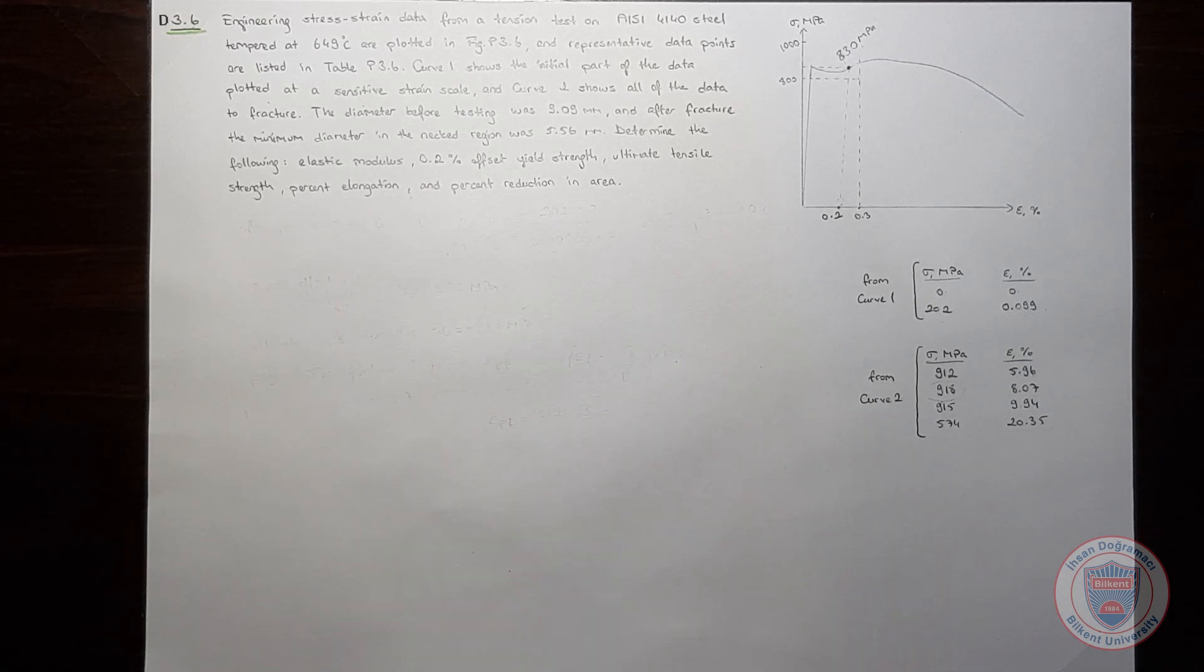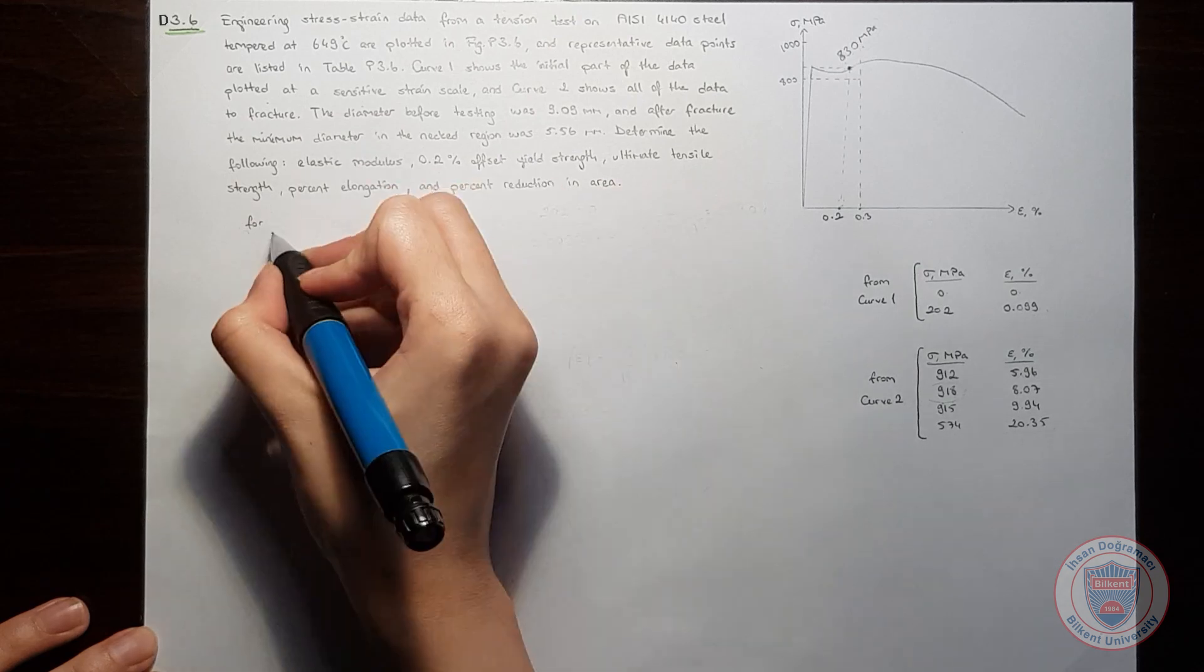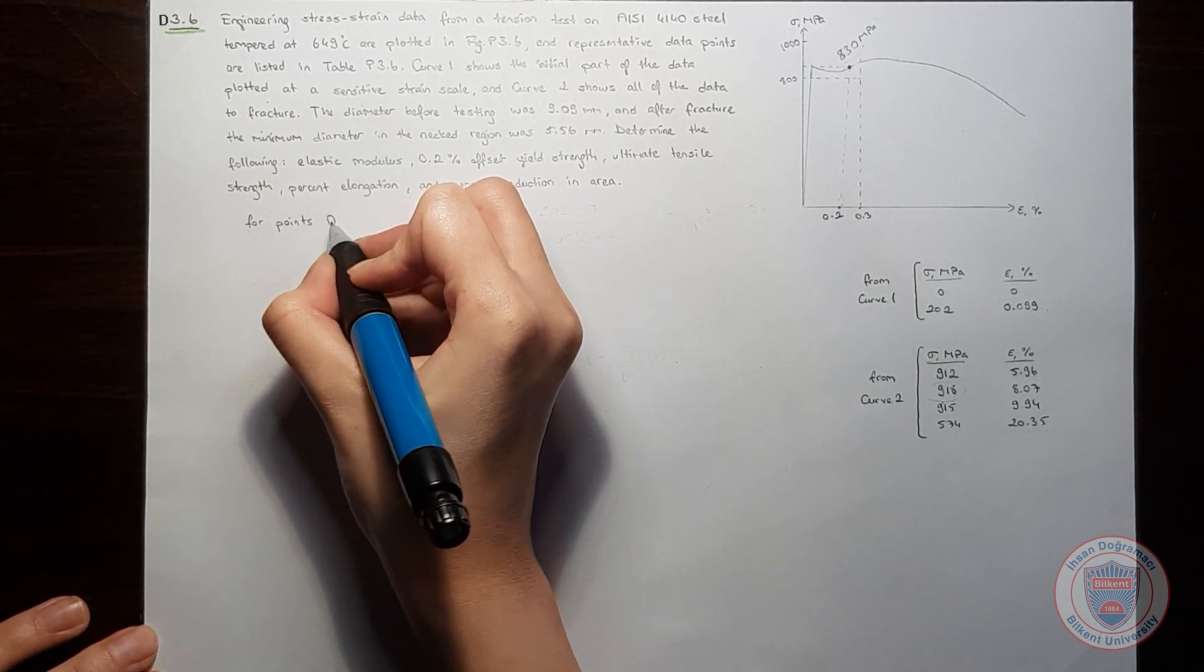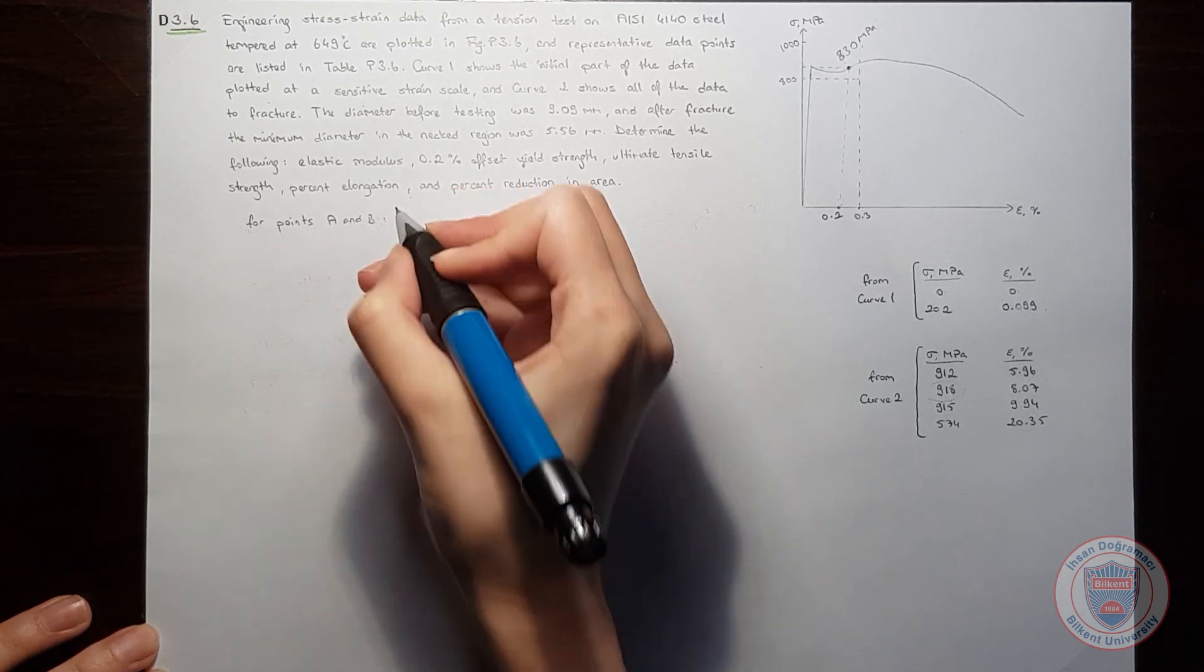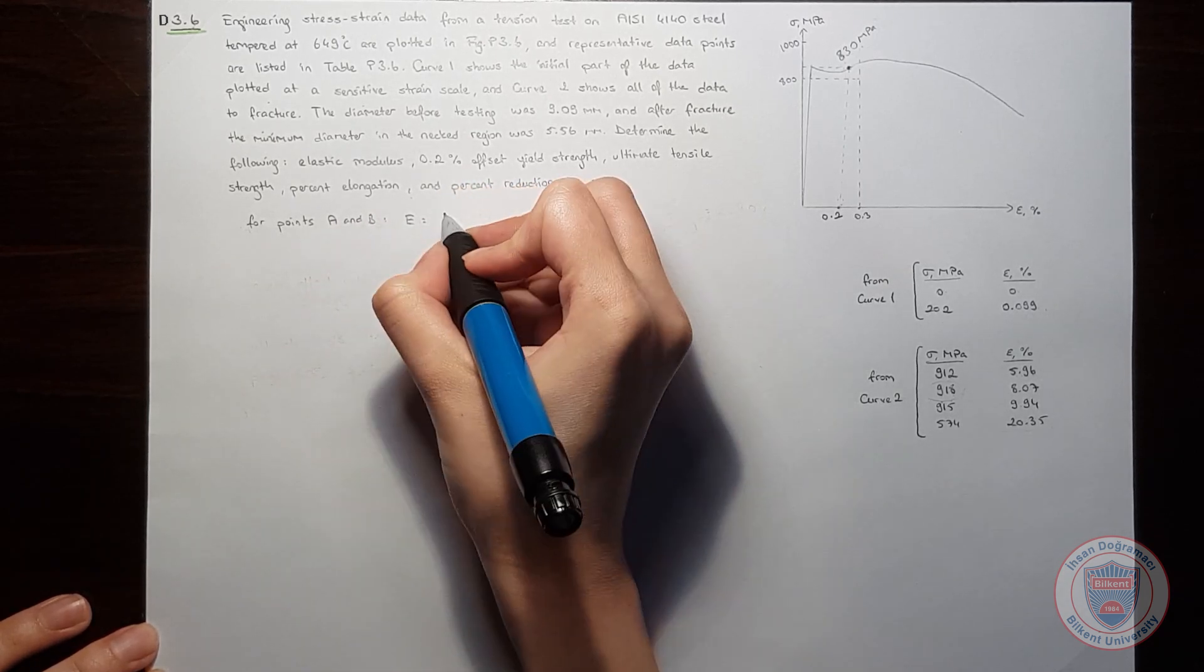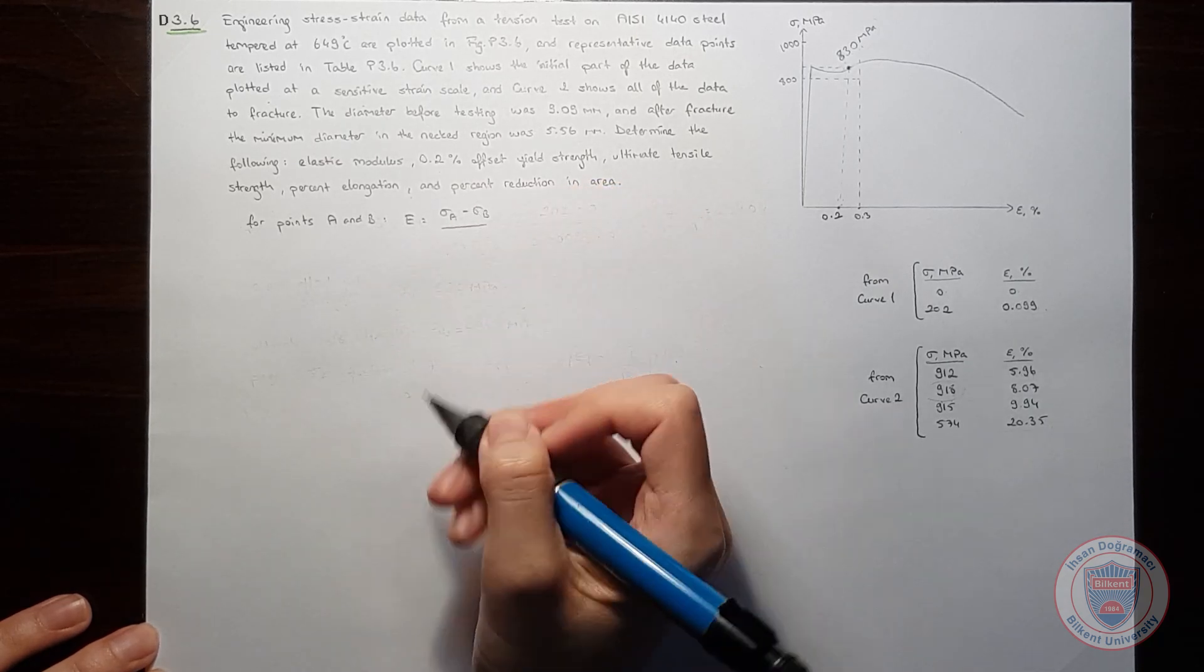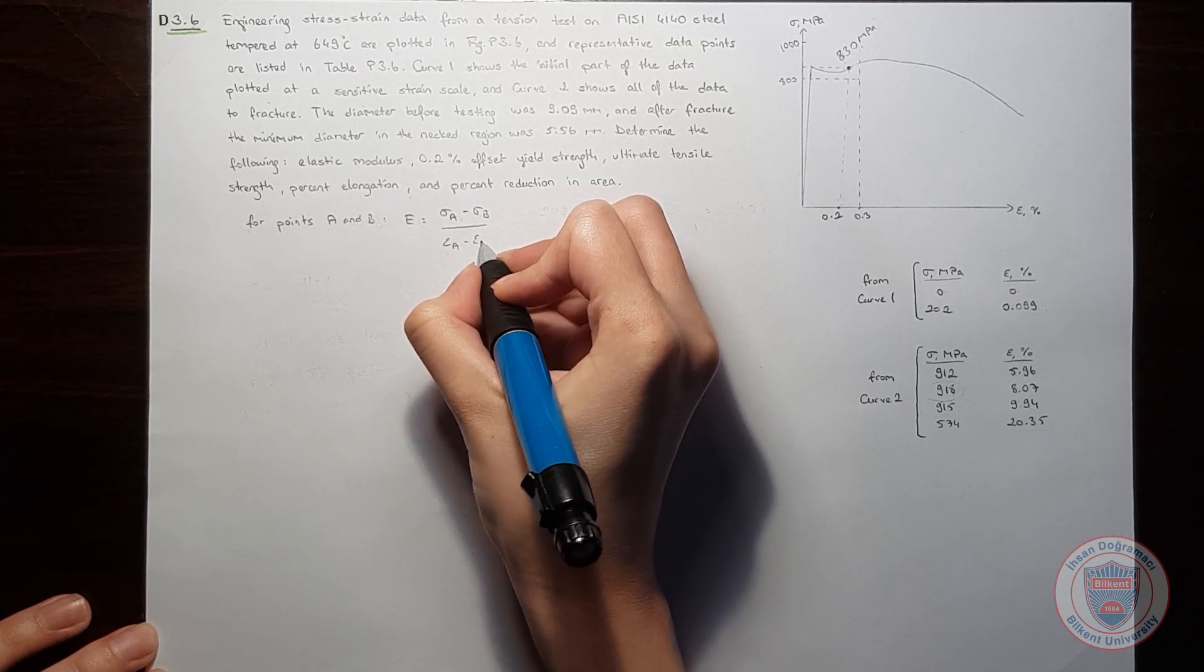Let's start with the elastic modulus. We know that for given two points, for example, suppose that they are A and B. The elastic modulus is sigma A minus sigma B, which are stresses, divided by strain at A minus strain at B.